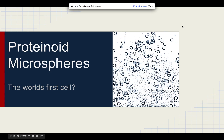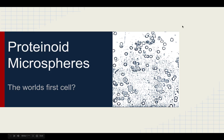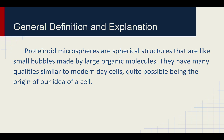We're going to learn about protonoid microspheres, the world's first cell. General definition and explanation: protonoid microspheres are spherical structures that are pretty much just like bubbles, and they are made by large organic molecules.